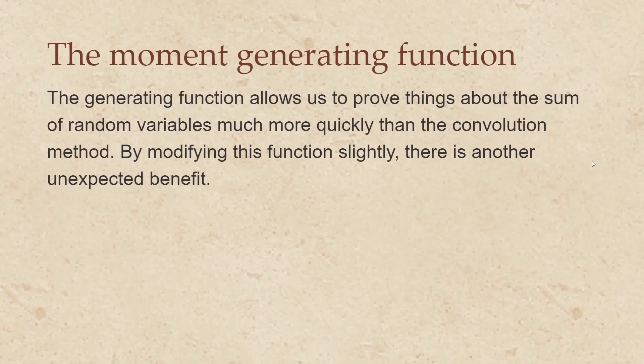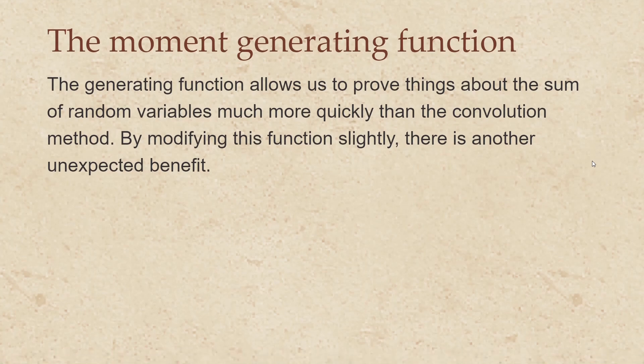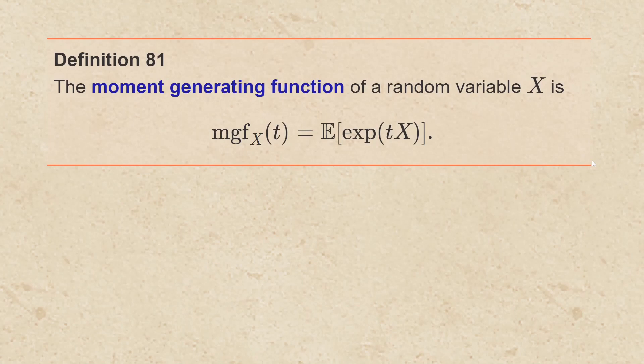The generating function allows us to prove things about the sum of random variables much more quickly than the convolution method. By modifying this function slightly, there is another unexpected benefit. The moment generating function of a random variable x is defined to be the expected value of the exponential function applied to t times x.